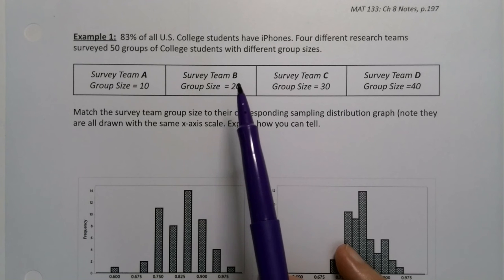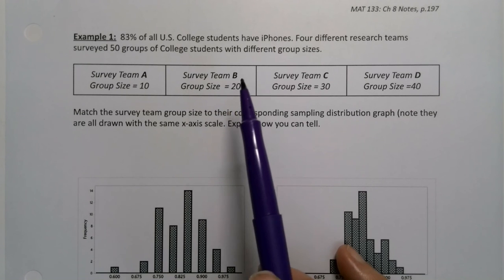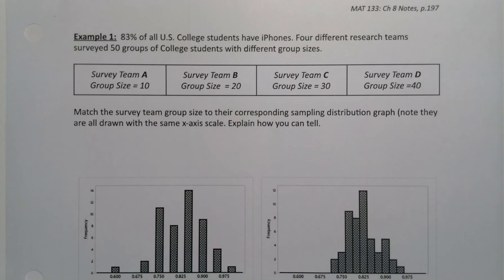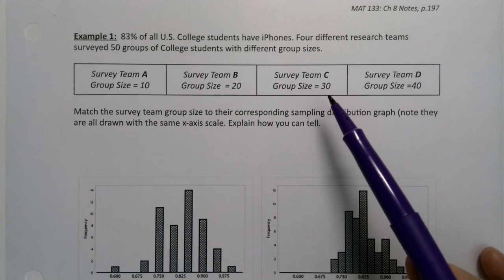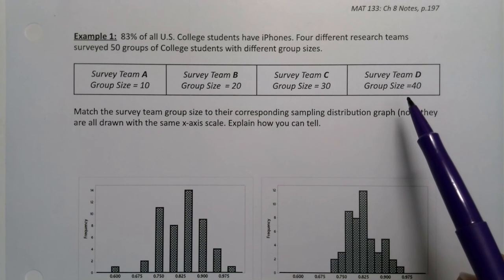20 college students, and then do it again, 20 more college students, and then do it again, 20 more college students. And then Team C did 50 groups of size 30, and Team D did 50 groups of size 40.